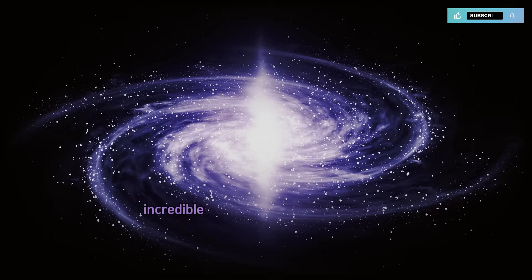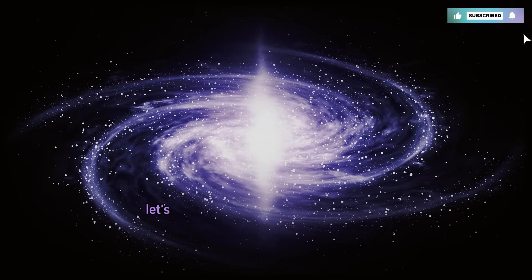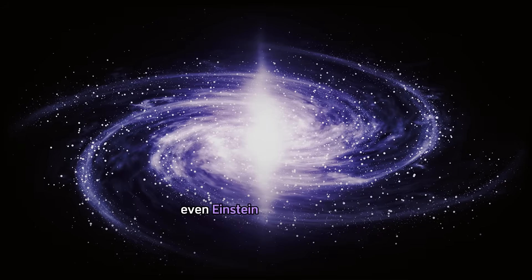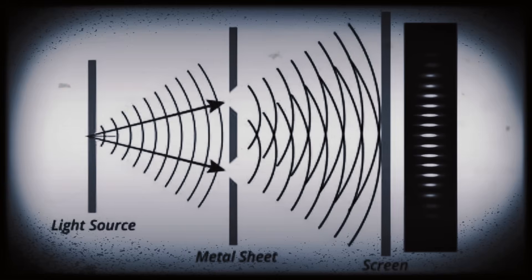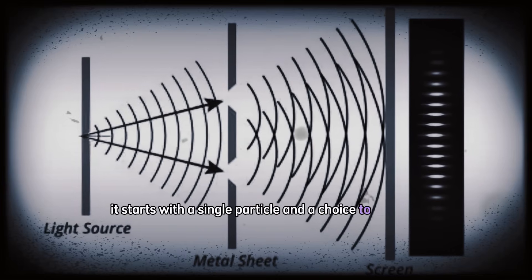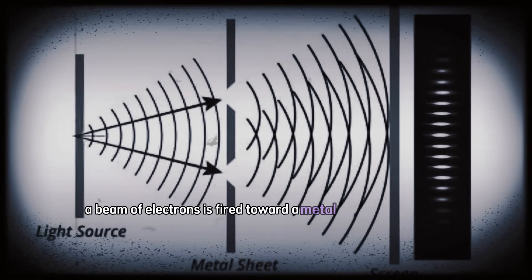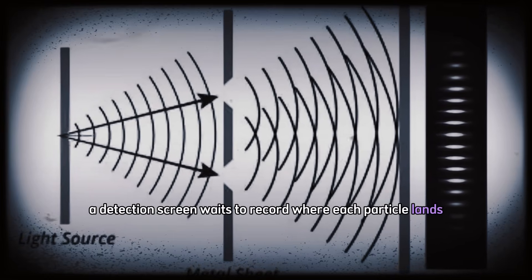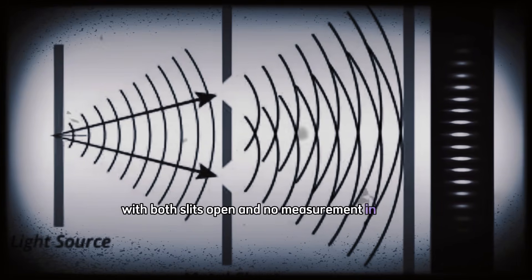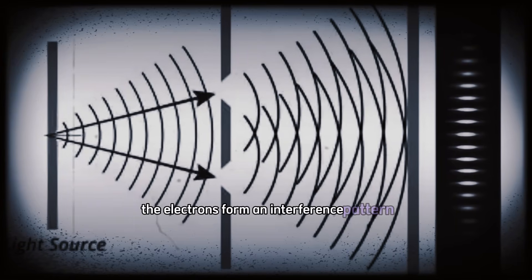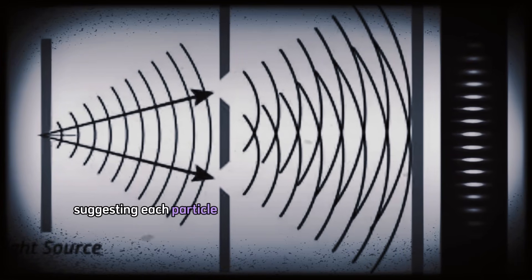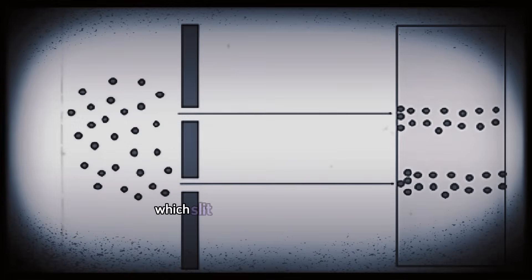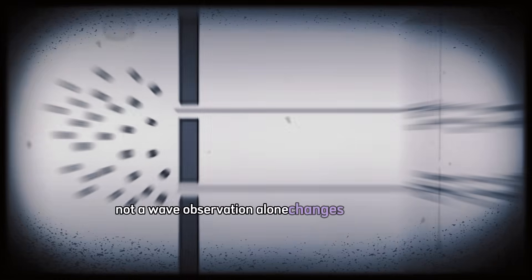Let's begin with an experiment so strange, even Einstein called it spooky. It starts with a single particle, and a choice to observe. A beam of electrons is fired toward a metal plate with two slits. On the other side, a detection screen waits to record where each particle lands. With both slits open and no measurement in place, the electrons form an interference pattern, a wave-like design suggesting each particle travels through both slits simultaneously. But when detectors are added to observe which slit the electron passes through, the pattern disappears. Observation alone changes the outcome.